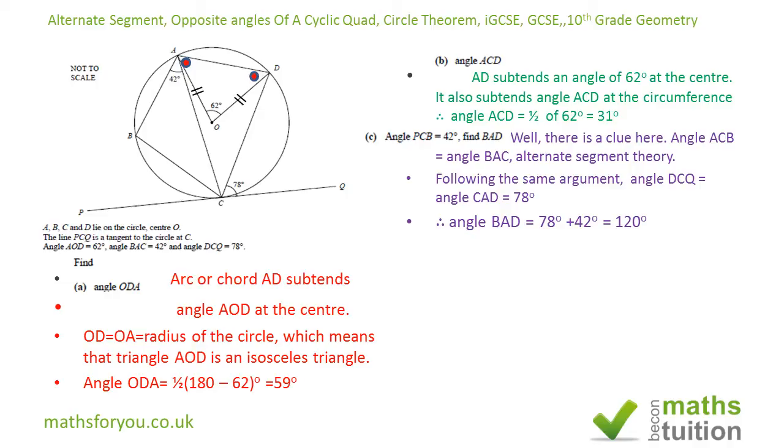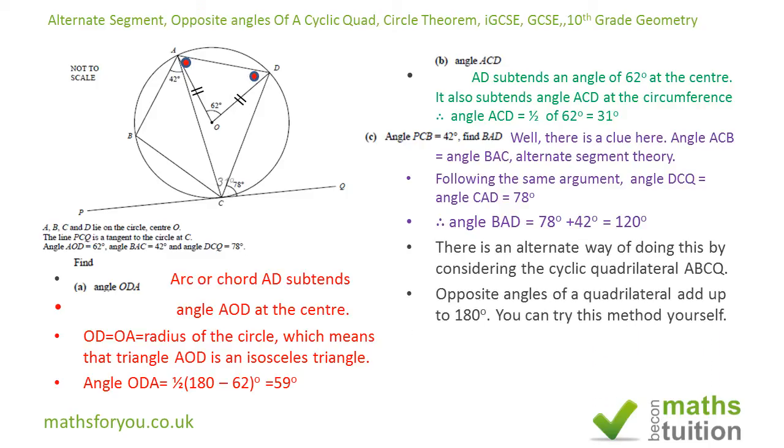There is an alternative method for this same problem. We know that's 78, we know that's 31 degrees, we know that's 42 degrees given to us. So we need to find this angle here.